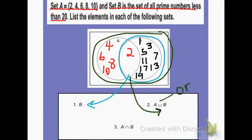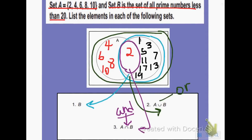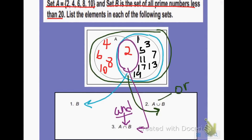Question 3 asks us to determine the elements that are in A intersect B, which would be the elements that are in both A and B. Intersection means 'and.' The only element that's in both set A and B would be the element 2. So that would be the elements of A intersect B.